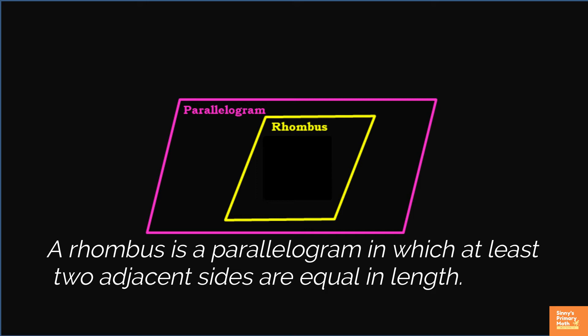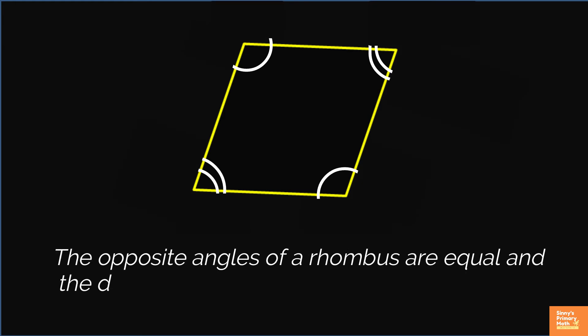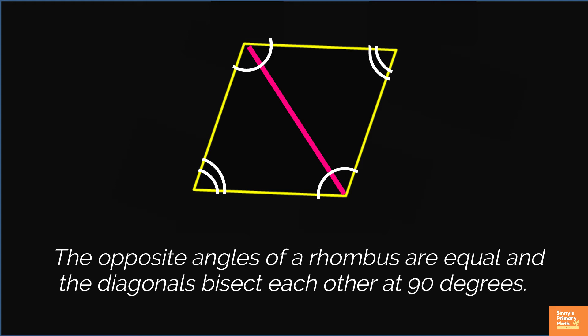Rhombus is a special type of a parallelogram whose all sides are equal. All rhombuses are parallelograms, but not all parallelograms are rhombuses. The opposite angles of a rhombus are equal and the diagonals bisect each other at 90 degrees.